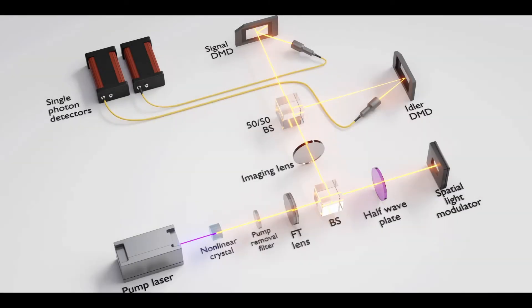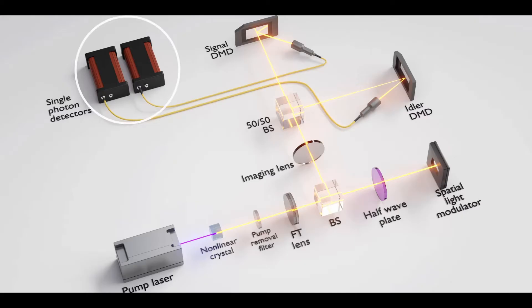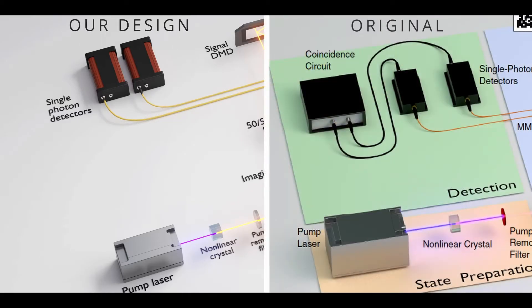The only critical thing missing is the Digital MicroMirror Device, so we'll model that together. A quick technical disclaimer before starting: for simplicity, I'll be using the photo detectors in the pack as the detection method. However, strictly speaking, this is incorrect, as standard photo detectors aren't capable of single photon detection, which is required in the paper setup.